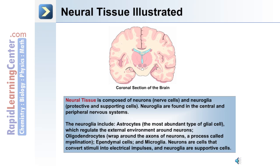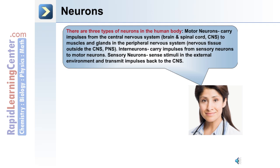Neurons are cells that convert stimuli into electrical impulses, and neuroglia are the supportive cells. There are three types of neurons in the human body: motor neurons, interneurons, and sensory neurons.